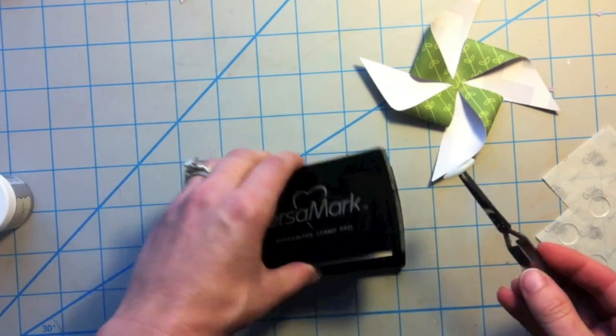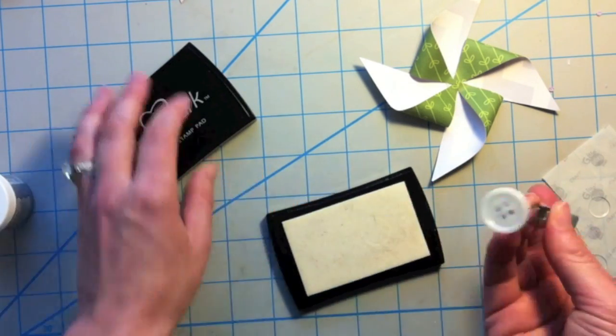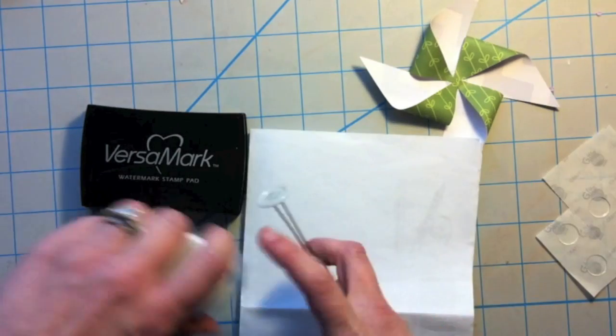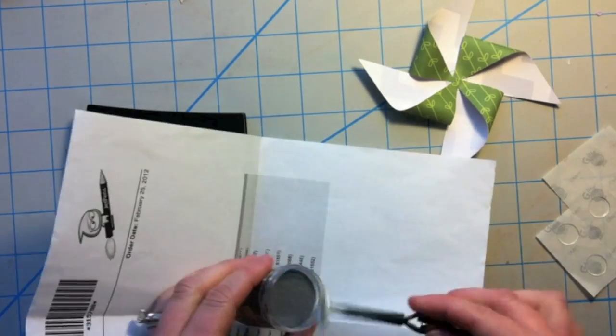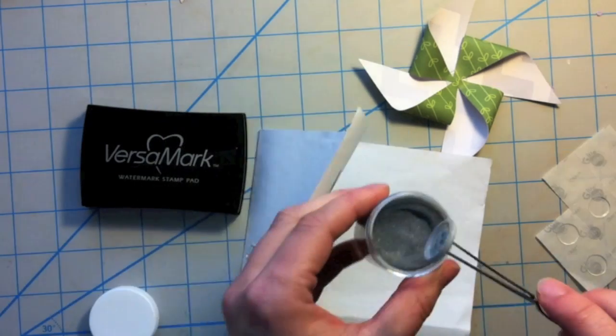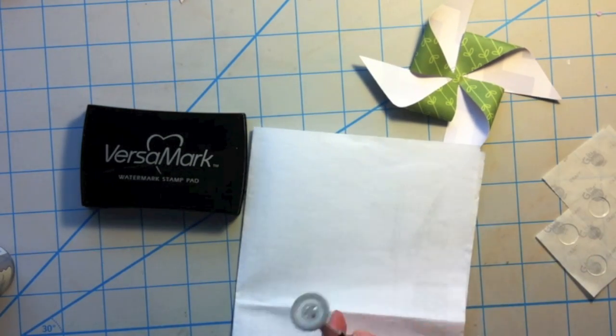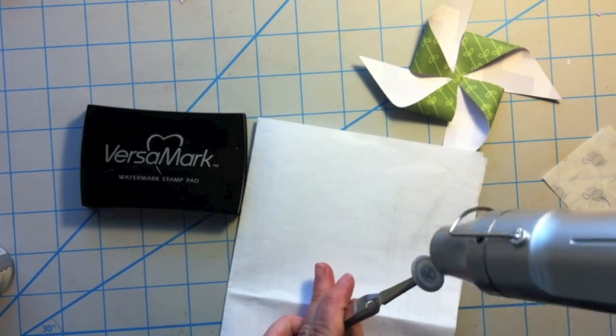And I wanted some bling to the button and I tried to color it with Copics, but it wasn't really working for me. So I grabbed another button and I'm pretty sure I saw this technique over on Christina Werner's blog and she just dipped an Versamark. So that's what I did. And then I just dumped it right into my embossing powder. It's silver embossing powder.